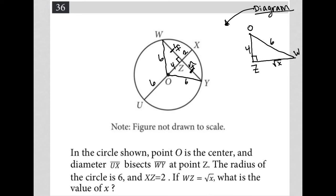Now, whenever I have a right triangle, I can use Pythagorean theorem, which means I could say that 4 squared plus square root of X squared equals 6 squared, right? 4 squared is 16, square root of X squared is just X, and 6 squared is 36. So subtracting 16 from both sides gets me X equals 20. And there's my answer.